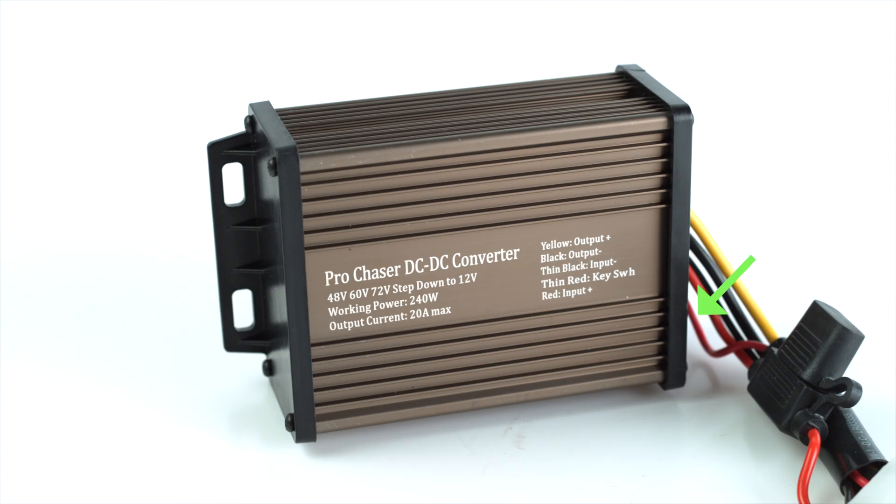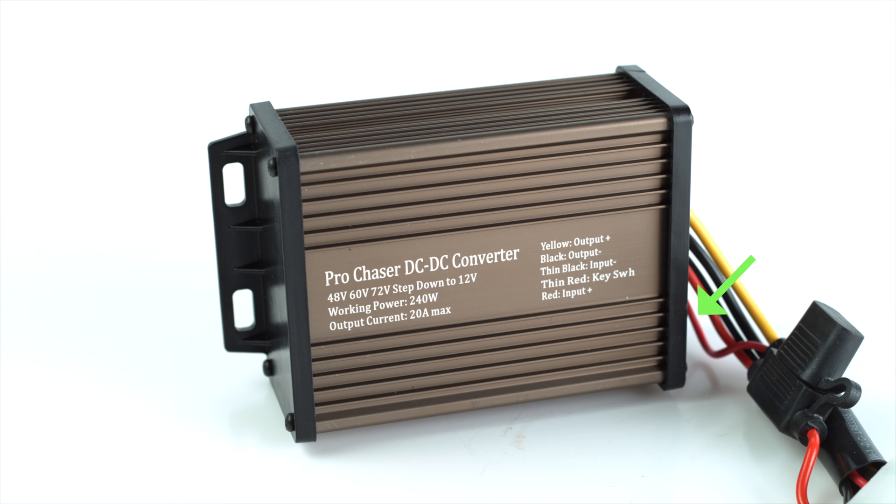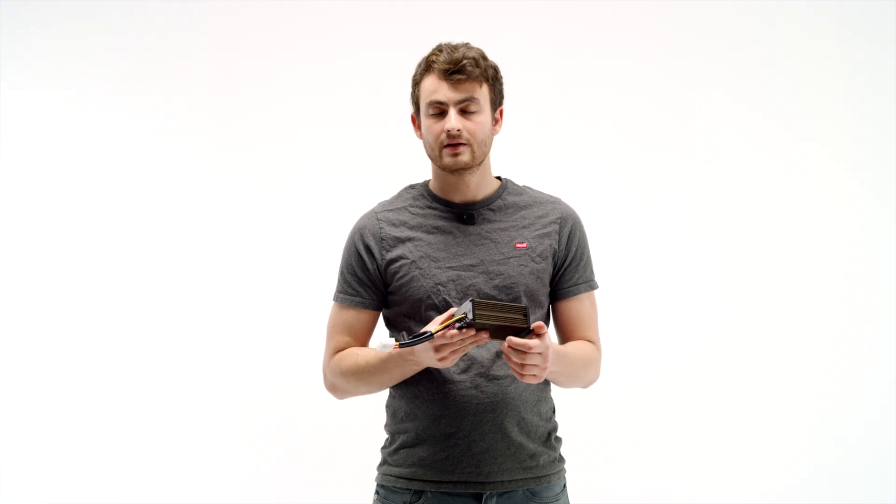Now there's one more wire on here, a thin red one, and that's our key switch. That will be connected to the output of the same key switch we use to turn on the speed controller. That way when the speed controller is signaled to turn on, this guy also turns on and starts outputting 12 volts.